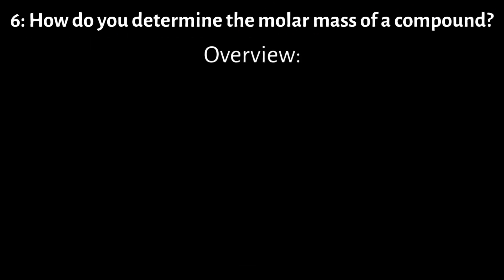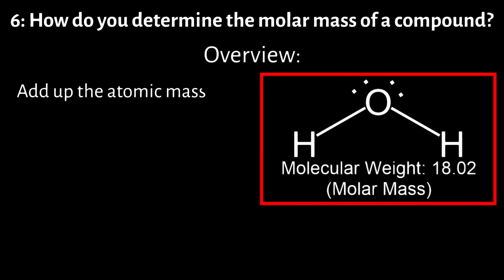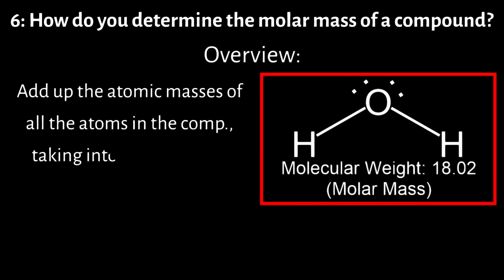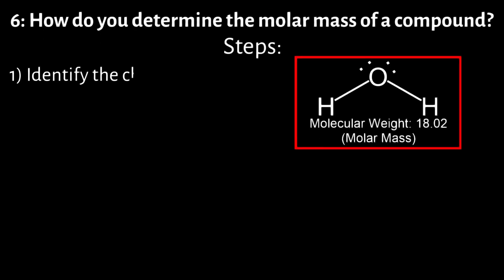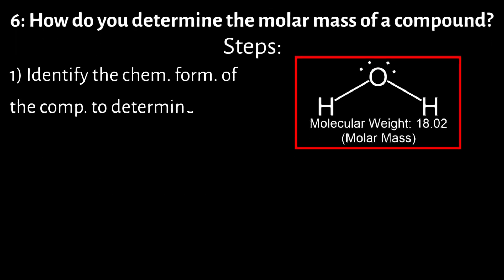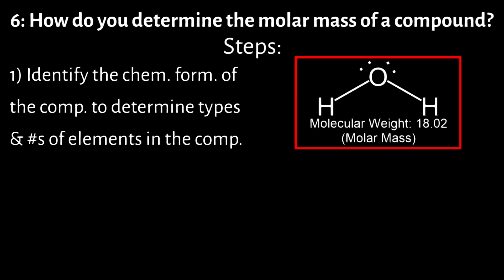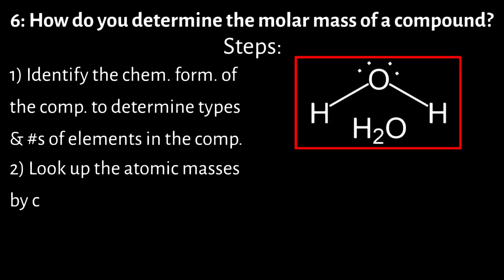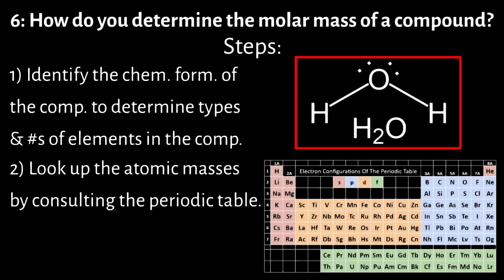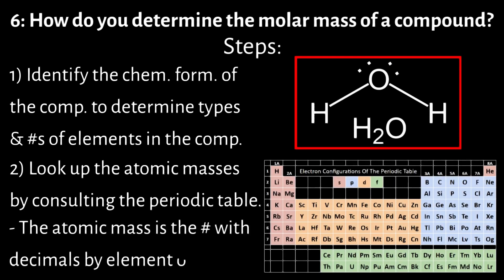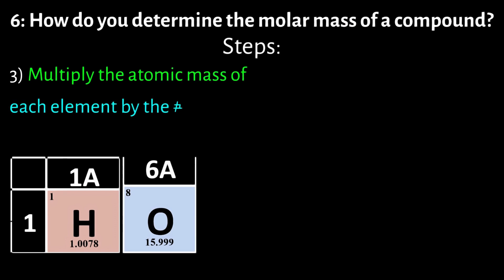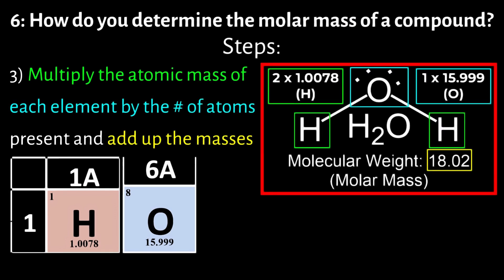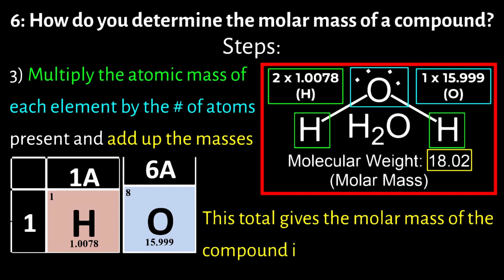Number 6: How do you determine the molar mass of a compound? To determine the molar mass of a compound, you add up the atomic masses of all the atoms in the compound, taking into account the number of each type of atom present. First, identify the chemical formula of the compound to determine the types and numbers of elements present. Next, look up the atomic masses by consulting the periodic table — the atomic mass is the number with decimals by the element of interest. Lastly, multiply the atomic mass of each element by the number of atoms present and add up the masses. This total gives the molar mass in grams per mole.